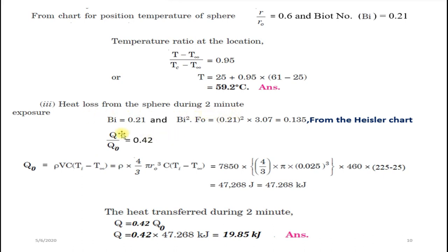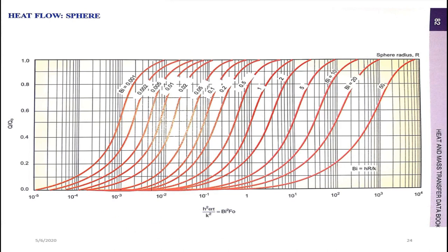For heat loss from the sphere during 2 minutes, we use the third graph (Gröber chart for sphere). We need Biot number 0.21 and Bi²×Fo = 0.135. From the third graph of the sphere (q/q₀ vs Bi²×Fo), locating these values we get q/q₀ = 0.42.